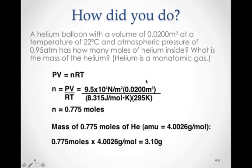Then multiply by the given volume, and then divide by the gas constant times 295 kelvin, because we had 22 degrees C. Adding that to 273, we get the 295. And that works out to be 0.775 moles, a little more than 3 quarters of a mole.